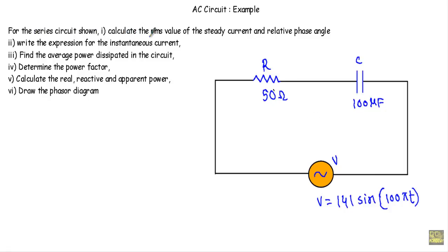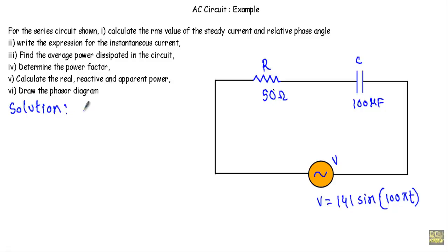For this series circuit we have to calculate the RMS value of the steady current, the relative phase angle between voltage and current, the expression of instantaneous current, the average power dissipated in the circuit, the power factor (whether leading, lagging, or in phase), the real power, reactive power, and apparent power, and finally draw the phasor diagram.